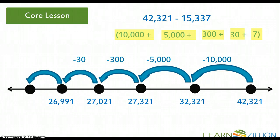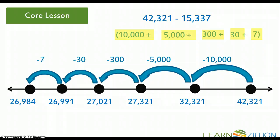And finally, I'm subtracting that seven in the ones place from 26,991 and coming up with a final difference of 26,984. In this lesson, you've learned how to subtract multi-digit whole numbers by using an open number line.